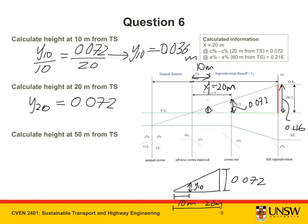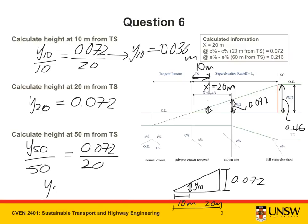For y50, I can again use similar triangles using the known relationship at x equals 20 meters. Putting this into the calculator gives y50 equals 0.180 meters.